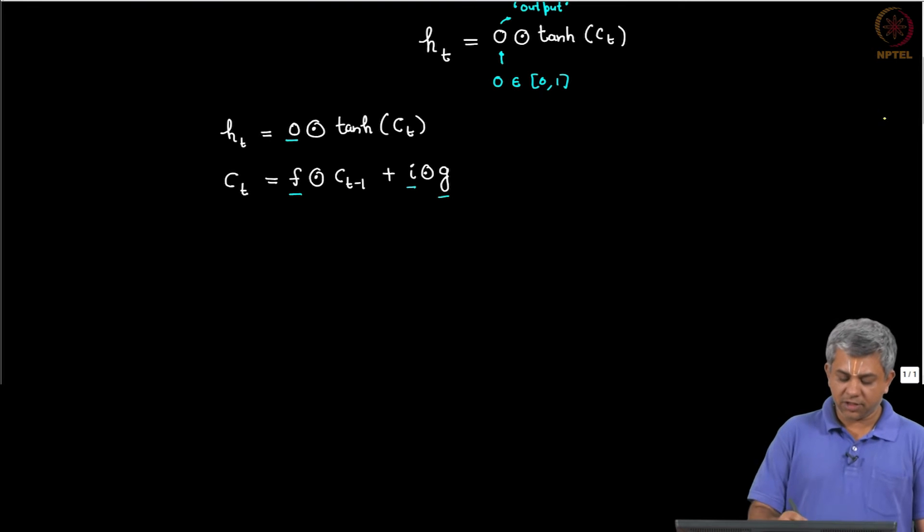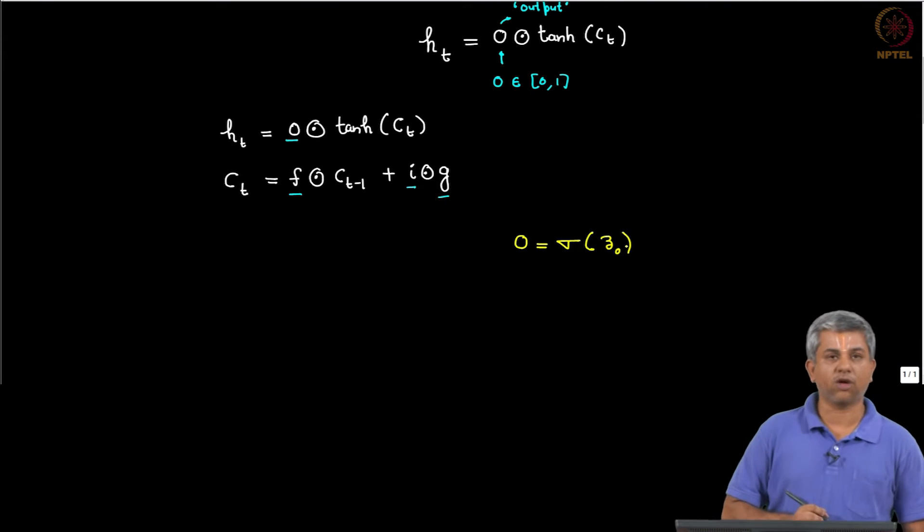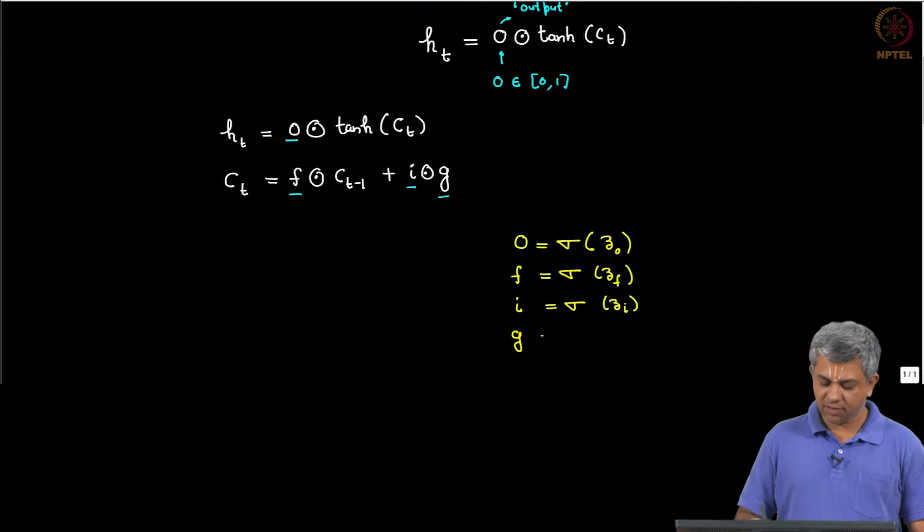So the idea is simple. Since O has to belong to [0,1] you say O is sigmoid of some Z_O where Z will be a linear combination of what came in. Similarly F will be sigmoid of Z_F, similarly I the input gate will be sigmoid of some Z_I, and G being the output of a vanilla RNN is simply tanh of Z_G.